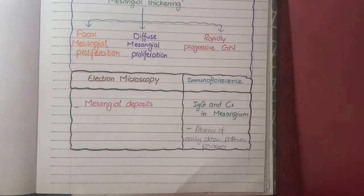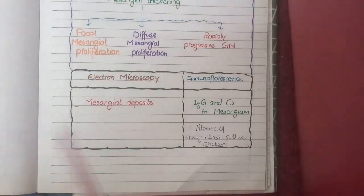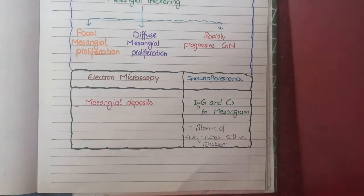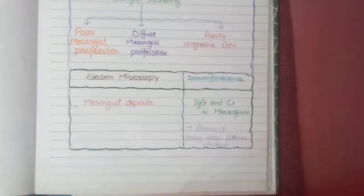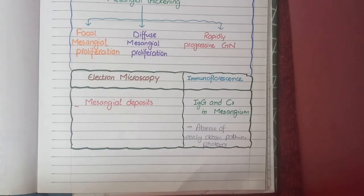On electron microscopy, mesangial deposits are seen, consistent with light microscopy findings. On immunofluorescence, staining is positive for IgA and C3 in the mesangium, reflecting IgA deposition and complement activation. An important additional point: unlike other immune-mediated glomerulonephritides, IgA nephropathy involves not the classical pathway but the alternative pathway of complement activation, so early classical pathway proteins will not be stained.